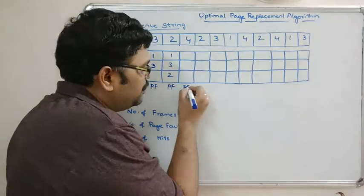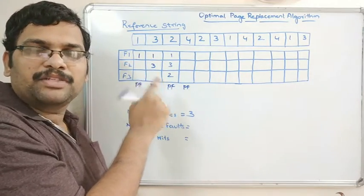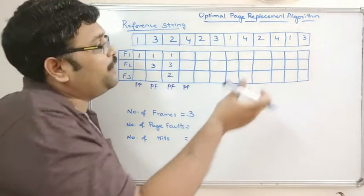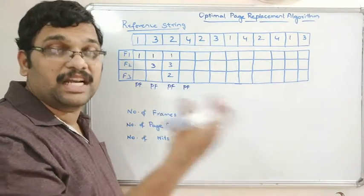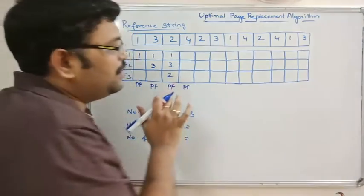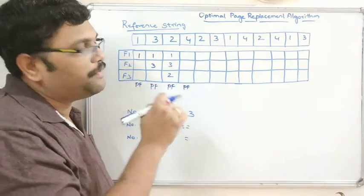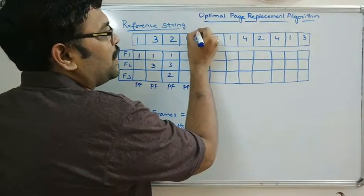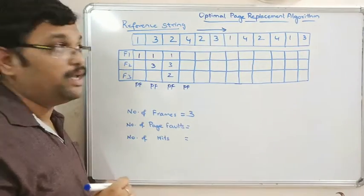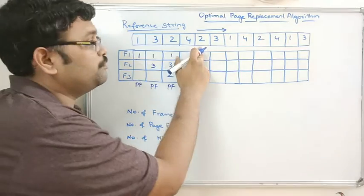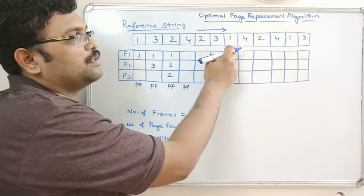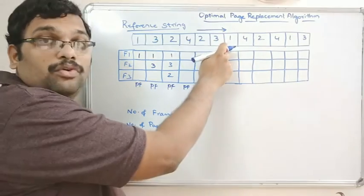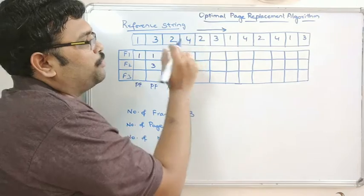Now page 4 is not in main memory, and there is no empty frame available, so we must swap out one page and swap in page 4. We select the page which is not going to be used for the longest duration in the future. Looking ahead from page 4: page 2 is needed immediately, then page 3 immediately after, and page 1 is third. So page 1 has the longest wait — we replace page 1 with page 4, giving frames: 4, 3, 2.